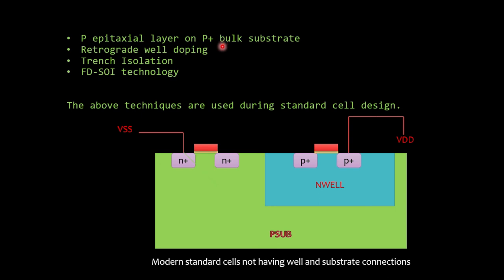Other prevention techniques include using a P epitaxial layer on a P-plus bulk substrate, where the P-plus bulk reduces substrate resistance. Next is retrograde well doping, where below the N-well there is an N-plus doped region. You can also use trench isolation, which provides complete isolation of the N-well and P-well so current never flows from one region to another. Finally, FD-SOI (fully depleted silicon on insulator) technology uses an insulation layer on which the transistors are built on an ultra-thin layer of insulation.